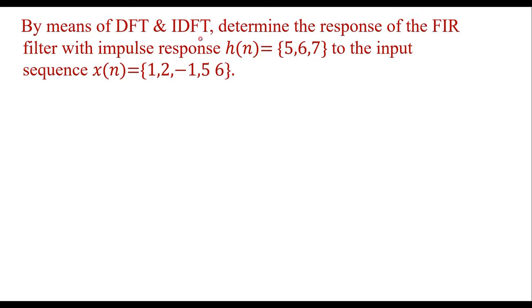By means of DFT and IDFT, determine the response of the FIR filter with impulse response H(n) equal to {5, 6, 7} to the input sequence X(n) equal to {1, 2, -1, 5, 6}. Find the solution for this.